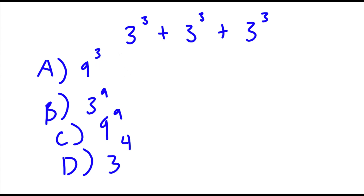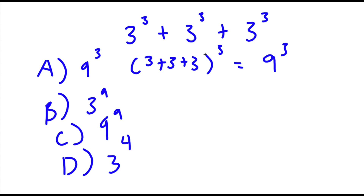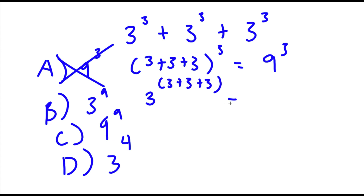For A, how they got this was they kept the exponents the same and they added all the bases. So 3 plus 3 plus 3 is 9, so they got 9 to the power of 3. And this method is actually wrong because you cannot add exponents like that. For B, what they did was they kept the base the same which is 3 and they added the exponents — 3 plus 3 plus 3 is 9, so they got 3 to the power of 9. And this is wrong as well.